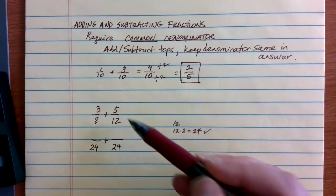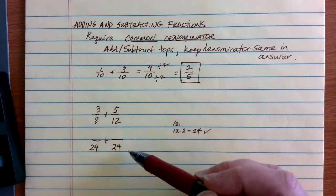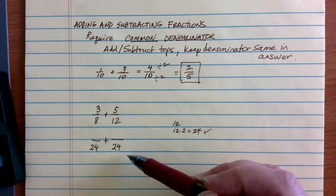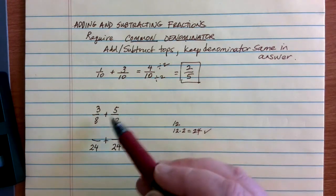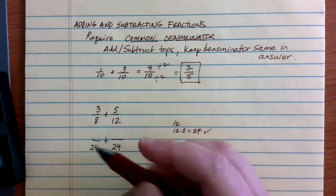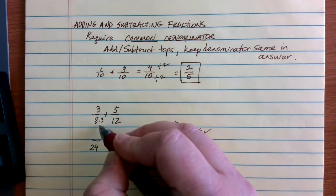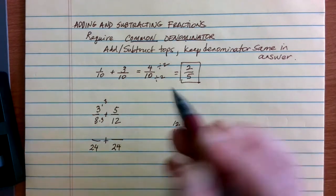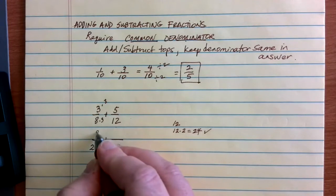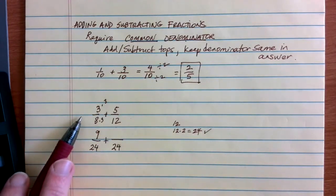Now what I need to do—I don't want to change the problem, obviously I still want to be adding 3/8 and 5/12—but I need these denominators to be 24 instead, so I'm going to create equivalent fractions for each of these. To get from 8 to 24, I would have had to multiply by 3. If I multiply the bottom of this fraction by 3, I also have to multiply the top by 3. 3 times 3 is 9, and so I have 9/24, which is an equivalent fraction to 3/8.